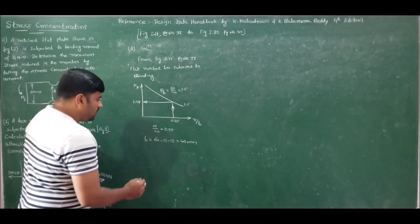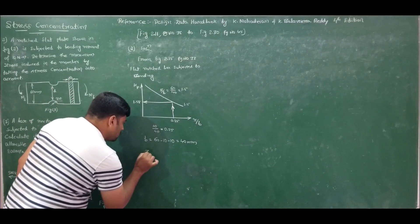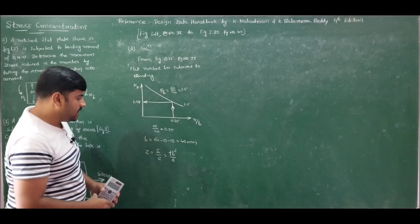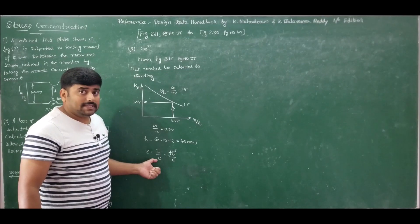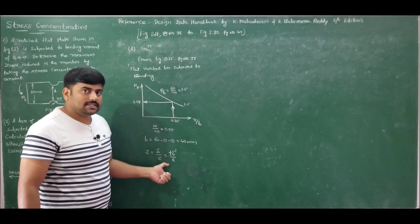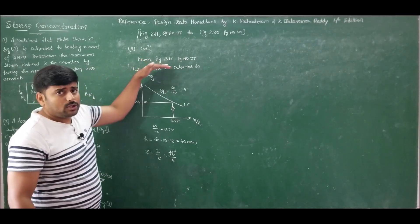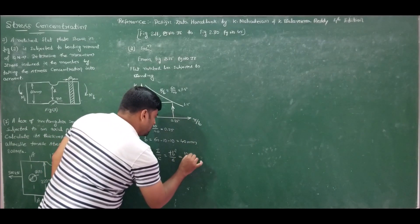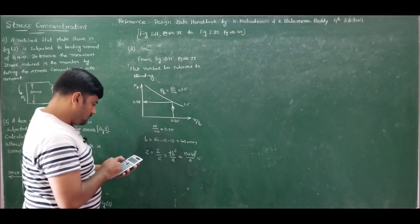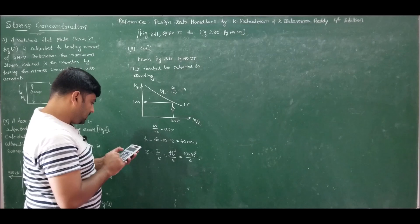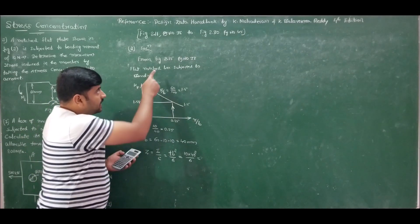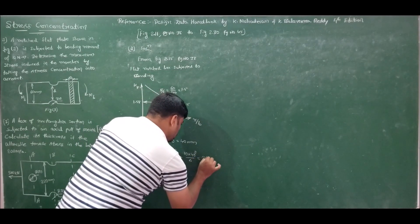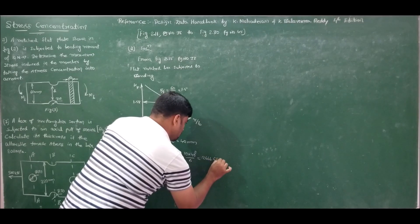In Figure 2.15 itself, the section modulus Z = I/c = tb²/6 is given directly. Note: it is printed as 'i/6' in some handbooks but it should be I/c. Substituting thickness t = 10 and b = 40: Z = 10 × 40² / 6 = 2666.67 mm³.